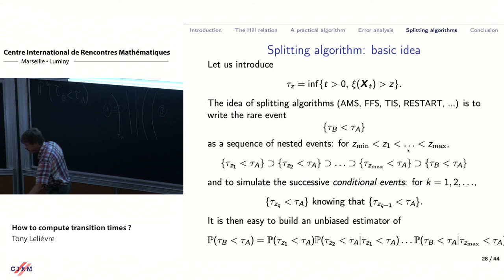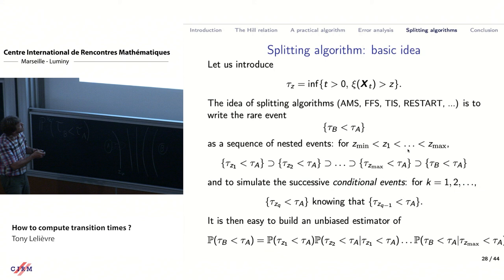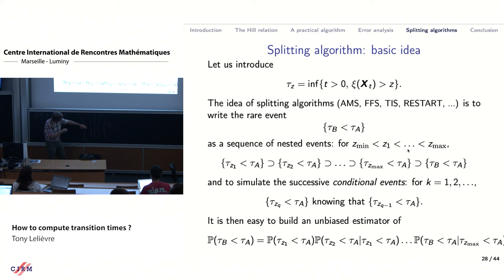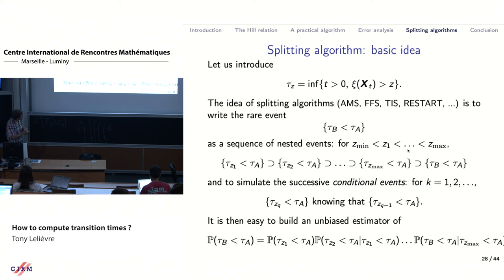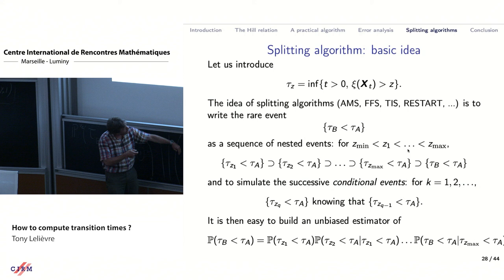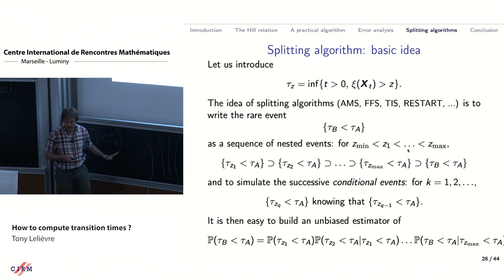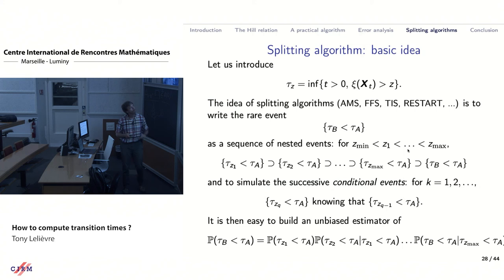To formalize: you have tau_{z_1}, the first time you reach z_1, and tau_{z_2}, up to tau_{z_max}, all forming a sequence of nested events. The probability to reach B before A is then a product: the probability to reach sigma_{z_1} before A, times the probability to reach z_2 before A given reaching z_1, and so on, times the probability to reach B before A given reaching sigma_{z_max} before A — which is basically 1 if sigma_{z_max} is close to B.